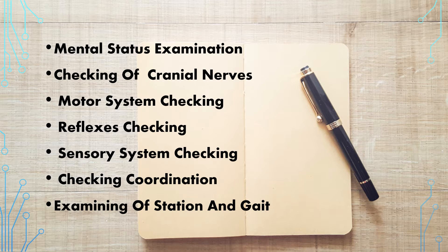The major components we will check in neurological examination are mental status, checking of cranial nerves, motor system checking, reflex checking, sensory system checking, checking of coordination, and examination of station and gait.